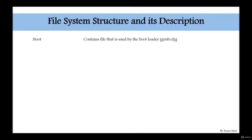The first and most important directory is /boot. It contains files used for the bootloader, such as the grub.cfg configuration file. Every time your system boots up, the operating system looks for /boot — this is hard-coded in the disk. It goes into /boot to find which operating system to start, whether it's an old, new, or upgraded version.